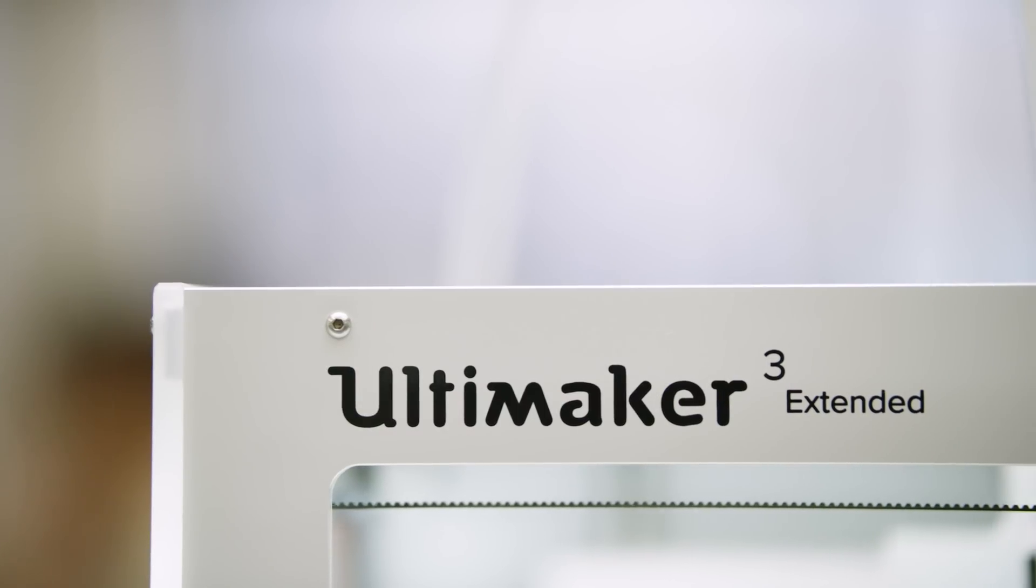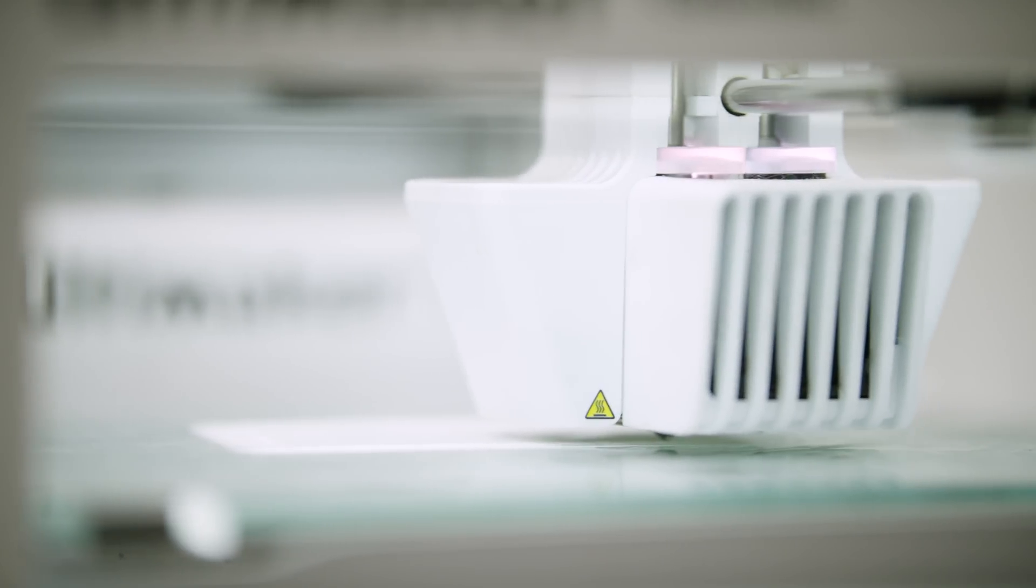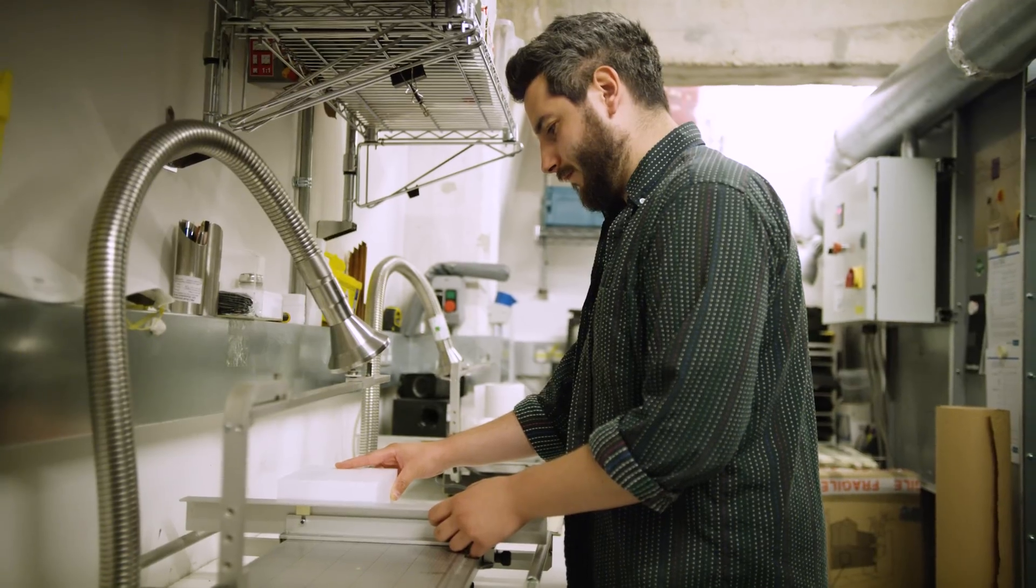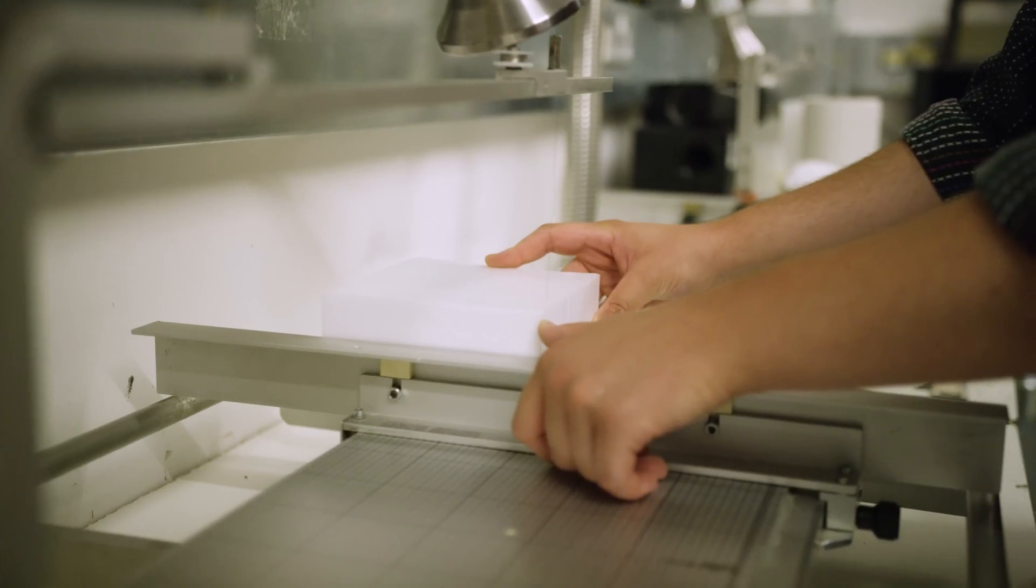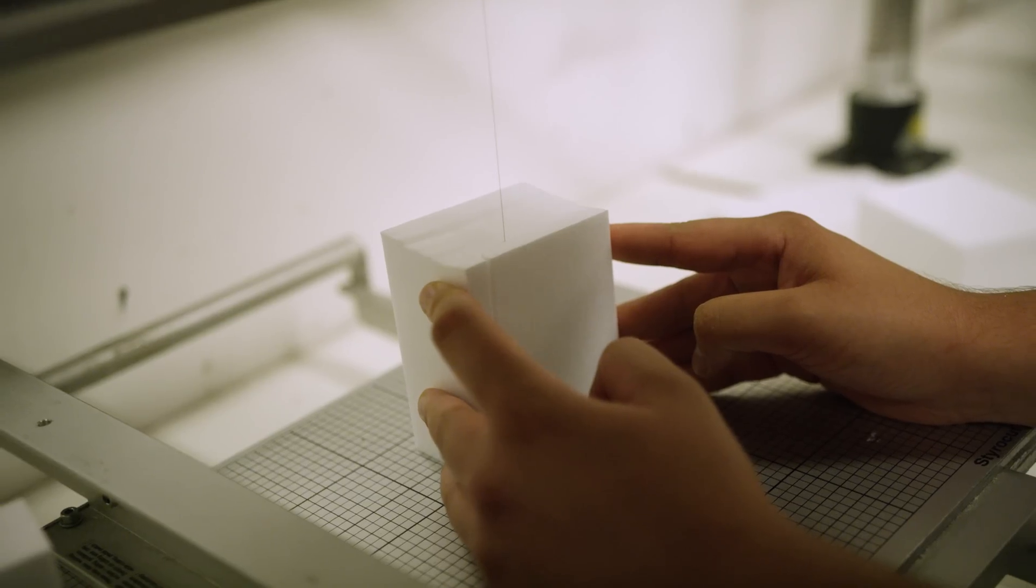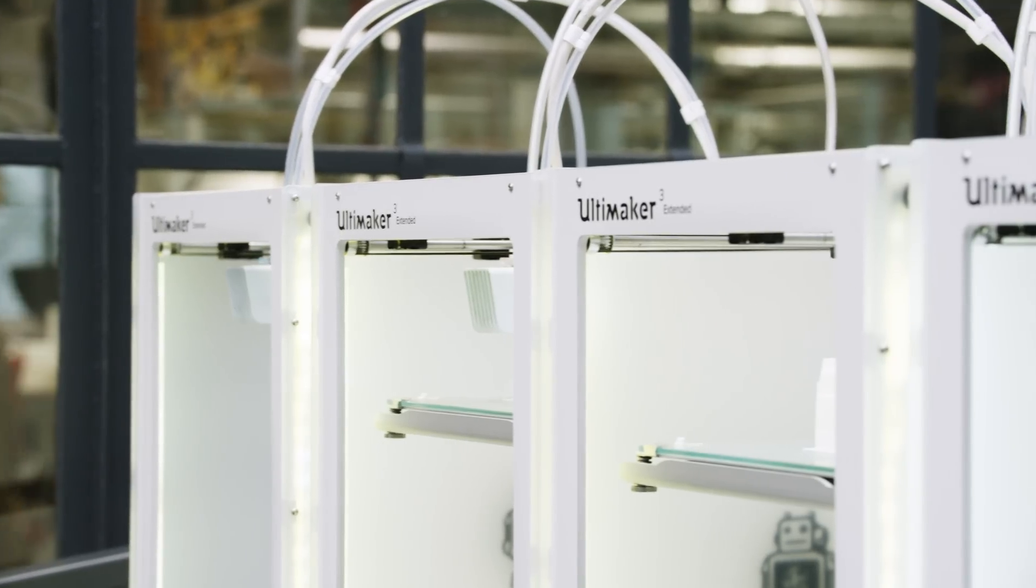Having the Ultimakers has really streamlined that process. Previously, we would have made these models by hand from foam and cardboard and things like that which is much more labour-intensive on the model makers. So having the printers is a much quicker way to do that.